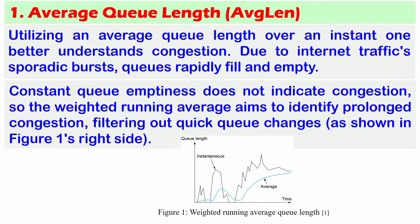Using an average queue length over an instant one gives a better understanding of congestion. Due to internet traffic's sporadic bursts, queues rapidly fill and empty. Constant queue emptiness does not indicate congestion, so the weighted running average aims to identify prolonged congestion, filtering out quick queue changes, as shown in Figure 1.